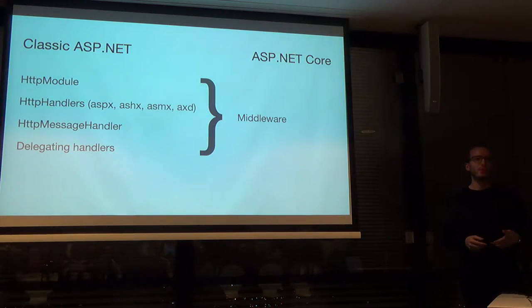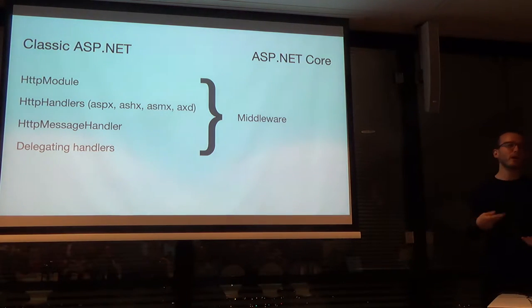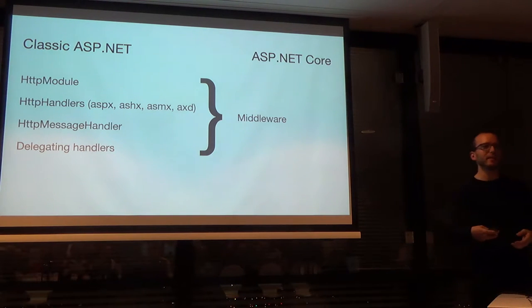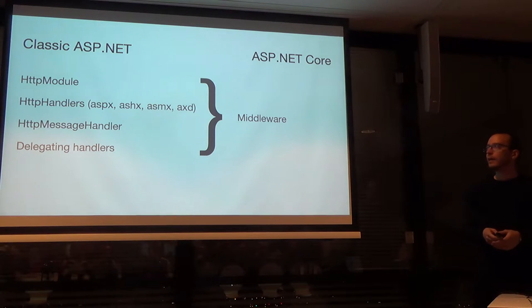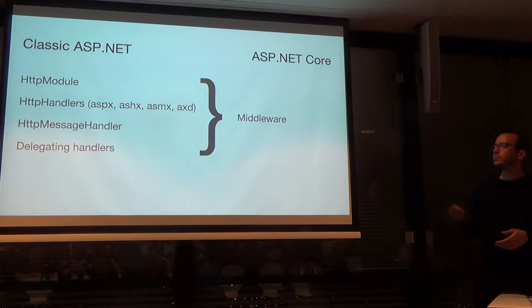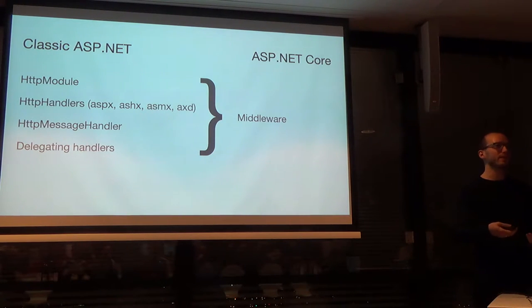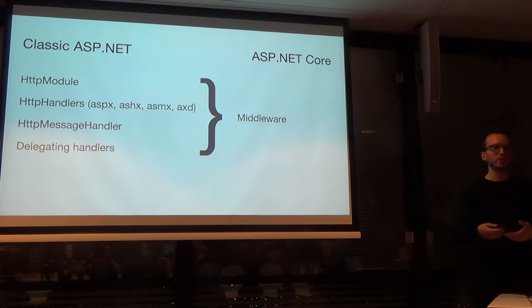Besides making the platform more modular and lightweight, there were also changes in the programming model of ASP.NET — a simplification. In classic ASP.NET, we had a bunch of different ways to handle and process HTTP requests, which could be confusing because their purposes were similar but their feature sets slightly different. This also contributed to the notion that ASP.NET was heavyweight and enterprise-oriented. In ASP.NET Core, all these different concepts were unified under a single concept called middleware.